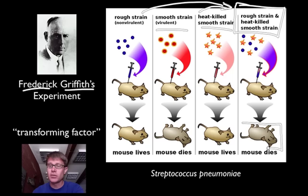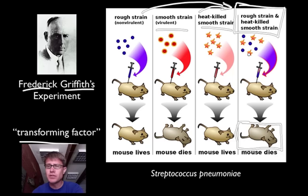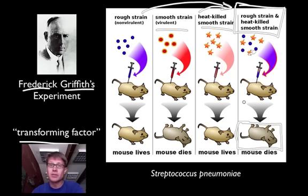What did he learn from that? Well he learned a lot. The big thing he learned is that there was a transforming factor — something was being transferred from the dead smooth strain to the live rough strains, transforming them into a virulent type of bacteria. He didn't know what it was, but it took the next 30 years to figure out that it was DNA and to figure out the structure of that.